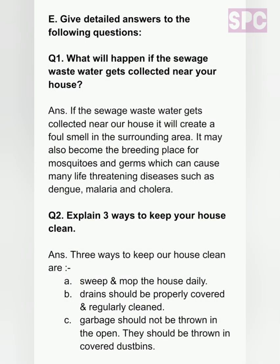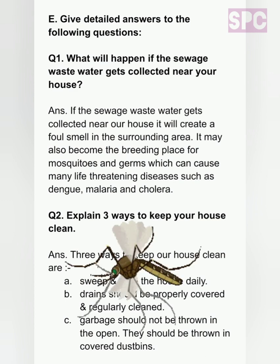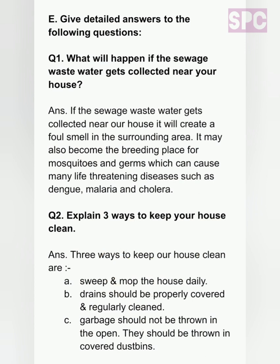Question E: Give detailed answers. Question 1: What will happen if the sewage water gets collected near your house? Answer: If sewage water gets collected near our house, it will create a foul smell in the surrounding area. It may also become the breeding place for mosquitoes and germs which can cause many life-threatening diseases such as dengue, malaria and cholera. Dengue and malaria are caused by the biting of two dangerous mosquito species, while cholera is a bacterial disease caused by consuming contaminated water. Question 2: Explain 3 ways to keep your house clean. You can add your own points as well.